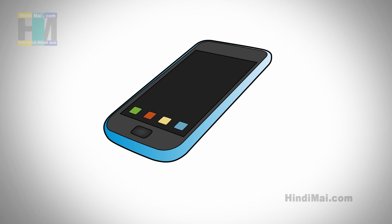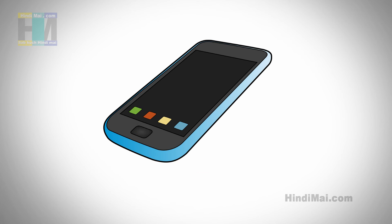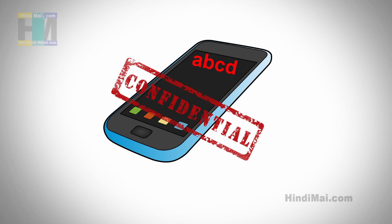We can hide any contact number or contact name. If a call comes from that number, the contact name and number will not be displayed. Or we can also change the display name. If a call comes, you can set it to show 'ABCD' instead, so anyone looking at your phone won't know who is calling.